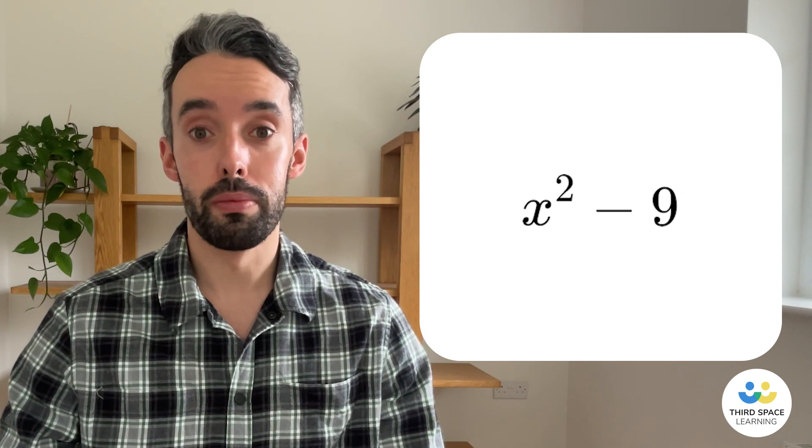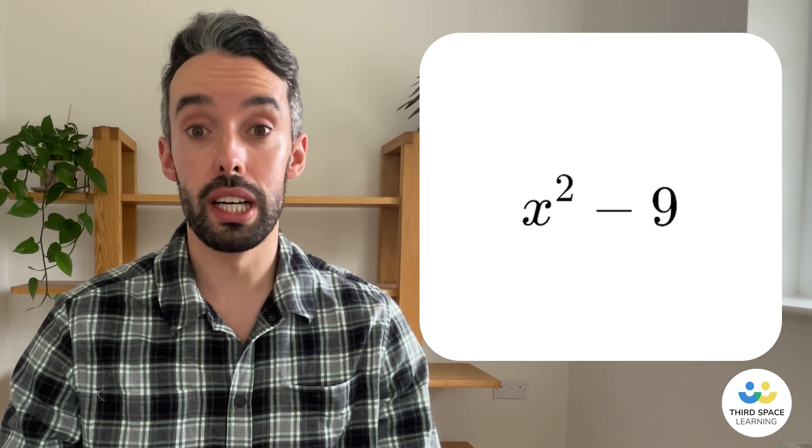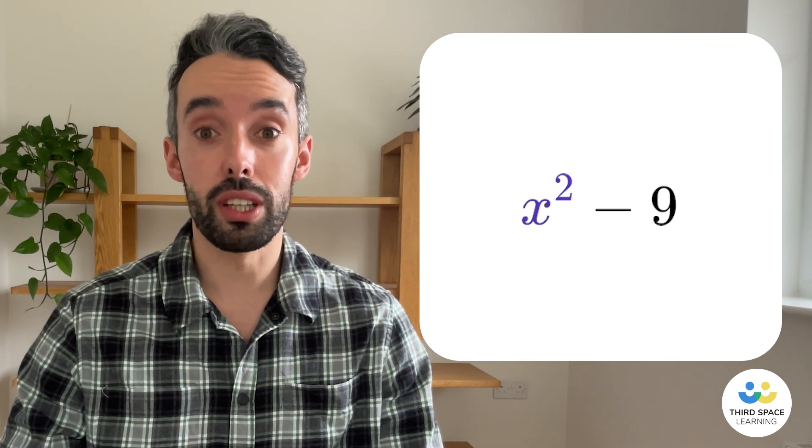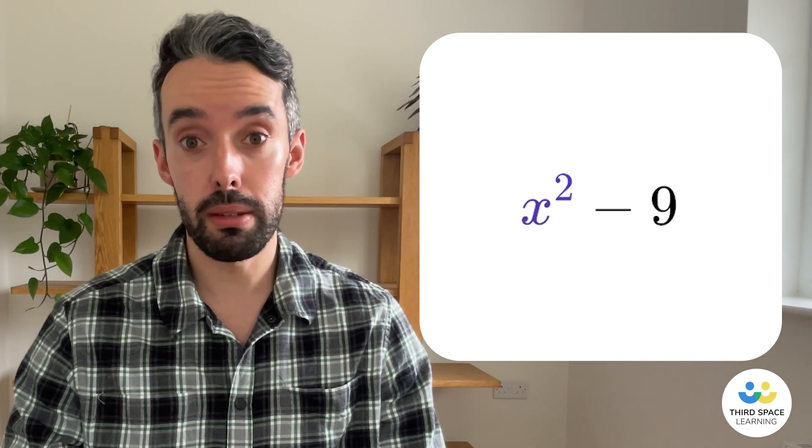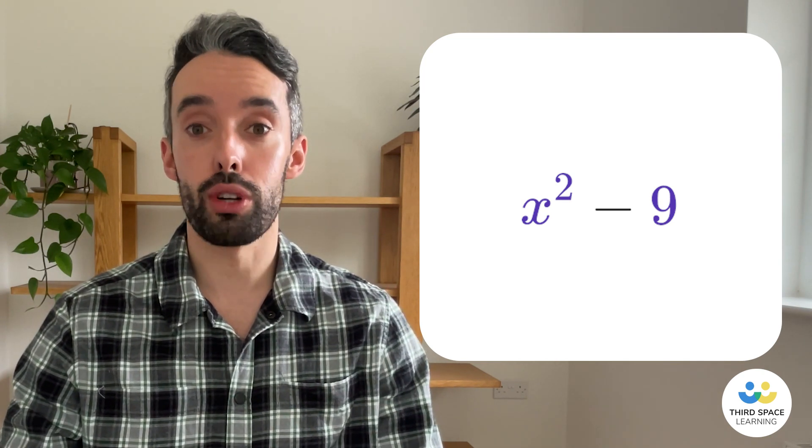So for example, let's factorize x squared take away nine by using the difference of two squares method. Now we can do this because x squared is a square number, and nine is a square number, and they're being subtracted.